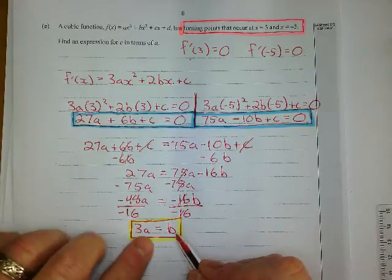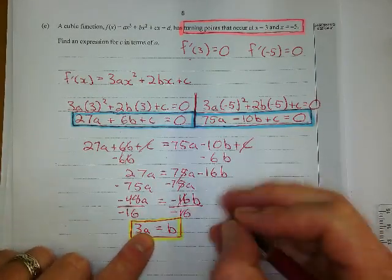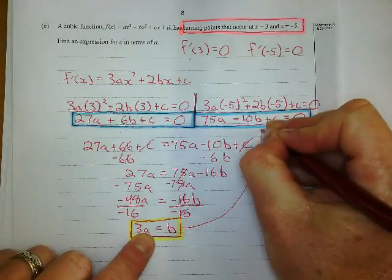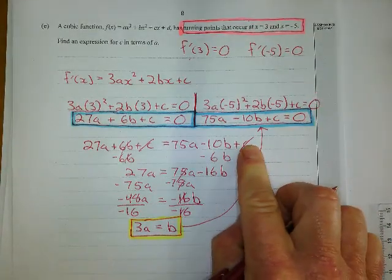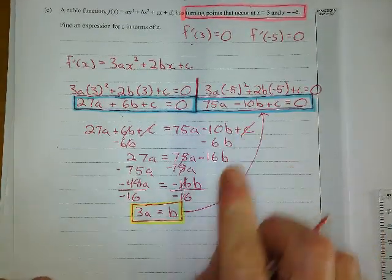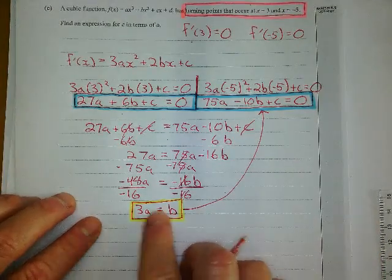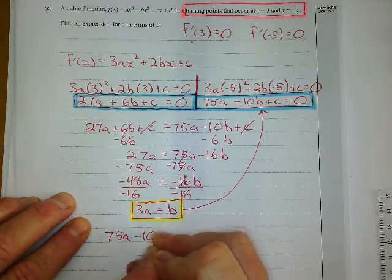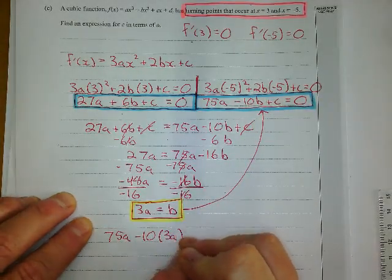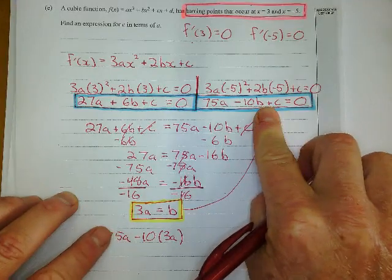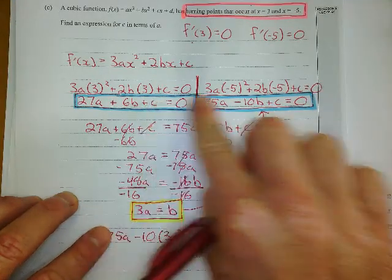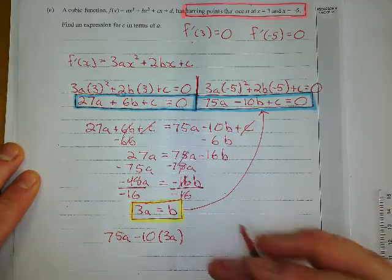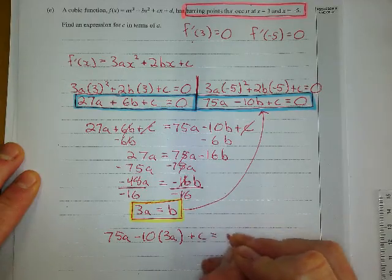So I went, well, what if I take this expression for b, which is 3a, and I throw it back into that expression right there? What would happen if I did that? But, so I go, well, if b is 3a, so that means 75a minus 10 times 3a, because that's the value of b, I'm substituting it in there. You could have put it in that one. I don't know why I put it in this one. I just did. Plus c equals 0.